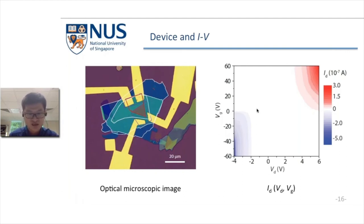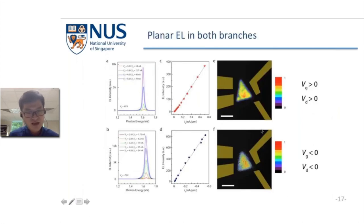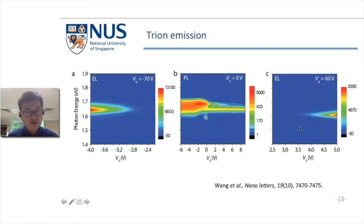First, we check the IV characteristics of the device. We found that in most cases, the device is in a high resistance condition. But in the positive gate and positive bias condition, or in negative gate and negative bias condition, there is current. This is understandable, similar to the WSE2 device. The only difference is that we have another conductive branch in the negative gate and negative bias. The next question is, can we see light emission from these two conductive regions? The answer is that indeed we see light emission in both these two regions and the emission is planar as shown from these figures.